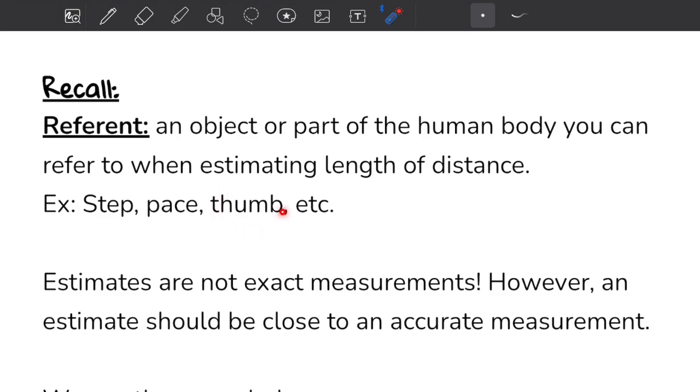A step, for example, is if you were to take one step, just a normal step, you're not stretching too far, and then you measure the distance from your original position to where you stepped. A pace is slightly bigger. A thumb is the distance from one side to the other.